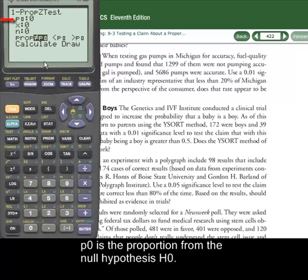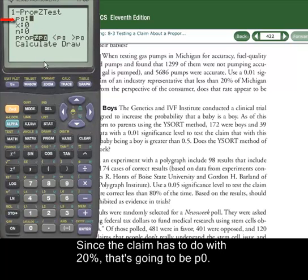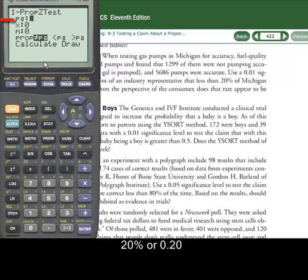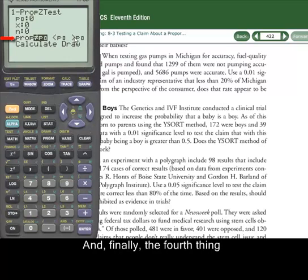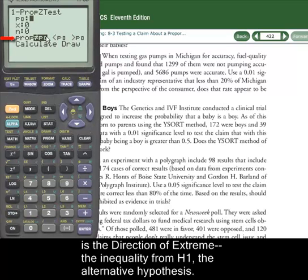P0 is the proportion from the null hypothesis, H0. Since the claim has to do with 20%, that's going to be the P0, 20% or .20. And then X and N are talking about the sample. N is the sample size, and X is how many in the sample are meeting the criteria of whatever we're looking for. And then finally, the fourth thing is the direction of extreme, which is the inequality coming from your alternative hypothesis, H1.